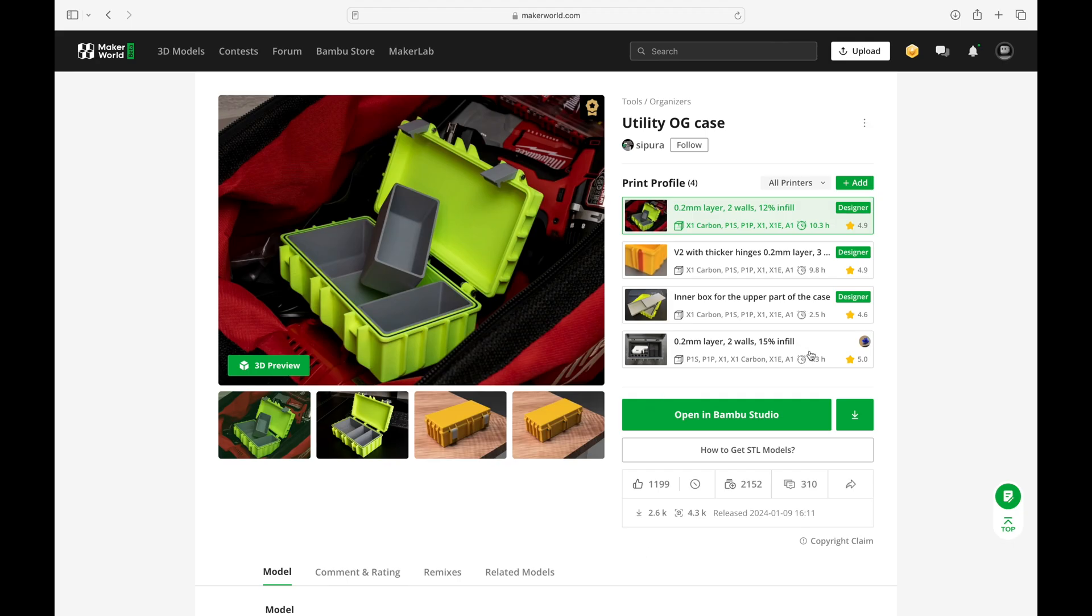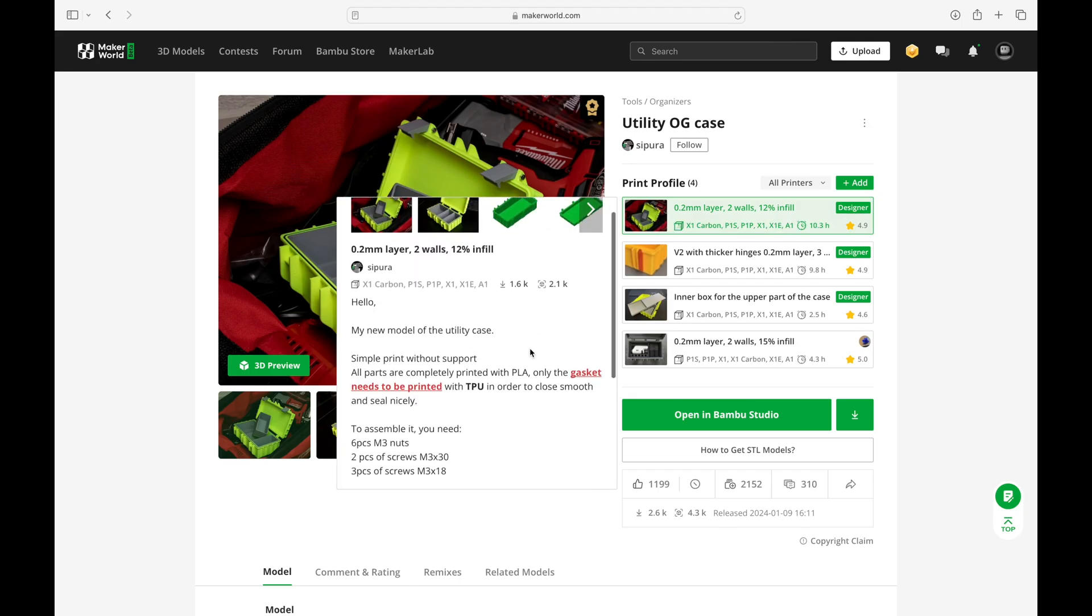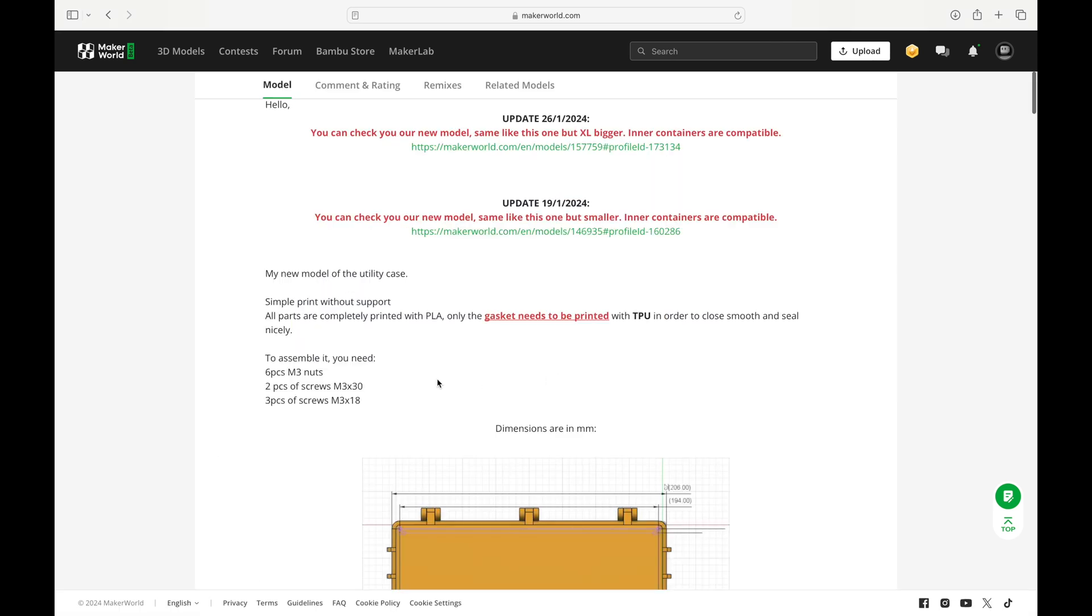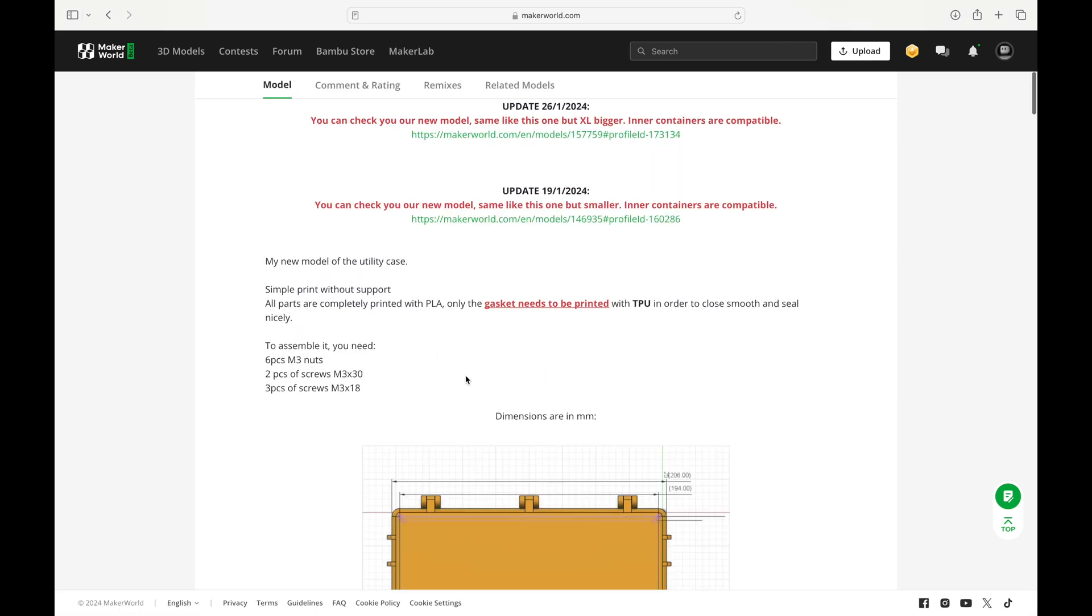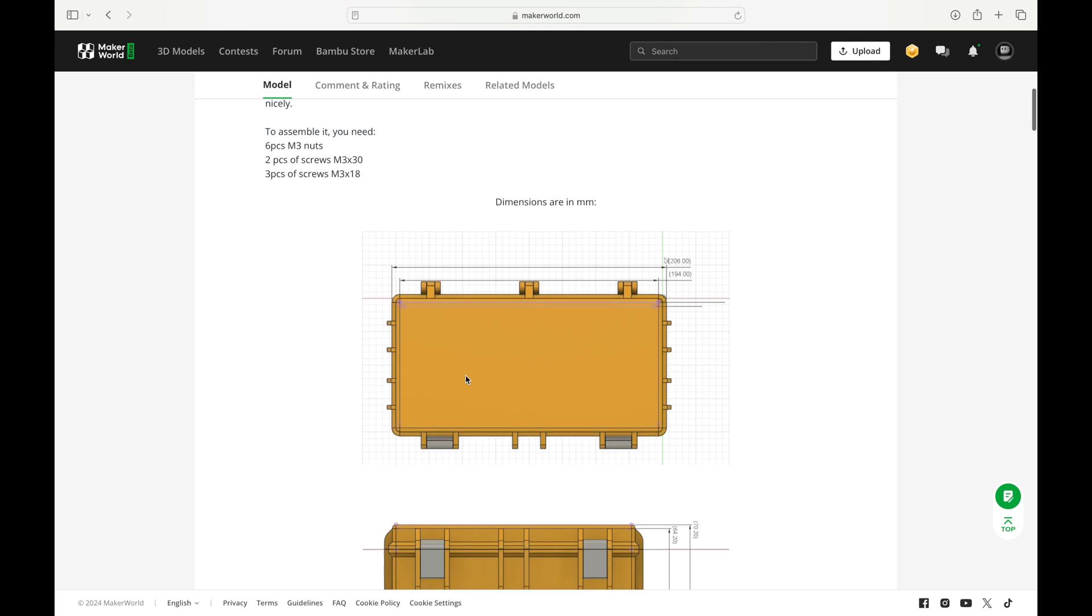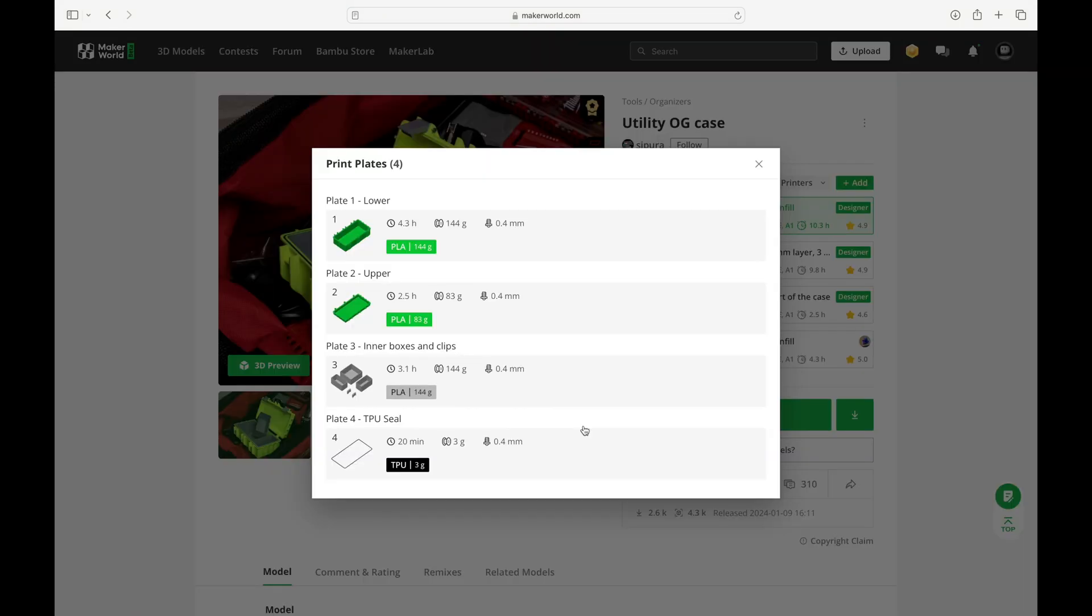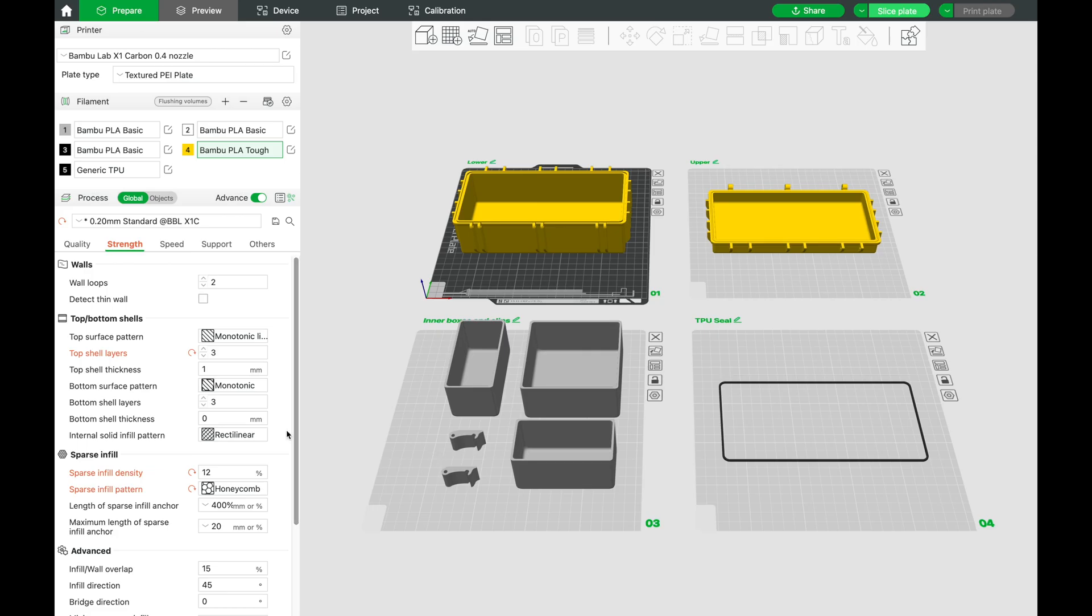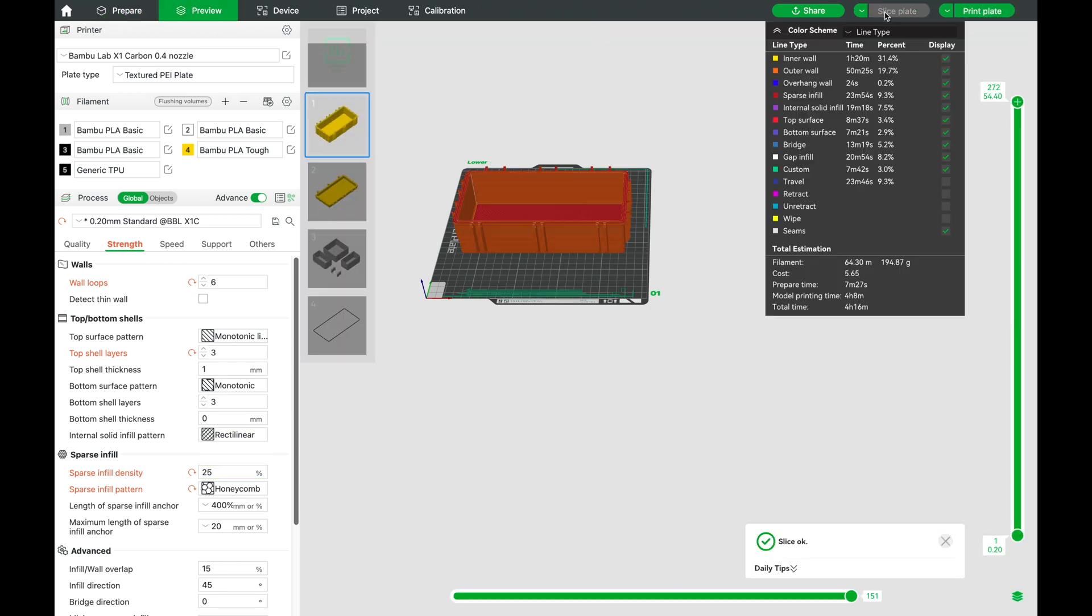The second case we found is a stout utility case over on Maker World. The creator Sapira lists the hardware needed for the case, as well as dimension drawings and links to other sizes on his page. This case will take four separate print plates. The creator suggested two walls and 12% infill, but in order to keep the comparisons as close as possible, we'll be increasing to six walls and 25% sparse infill density. For all the other settings, we'll be going with the designer's recommendations.